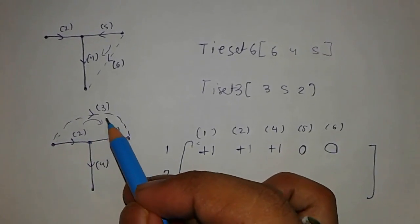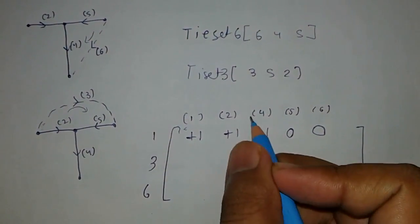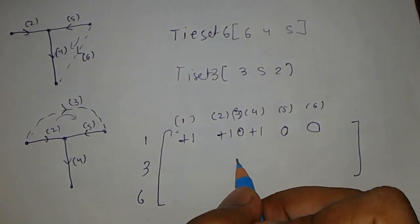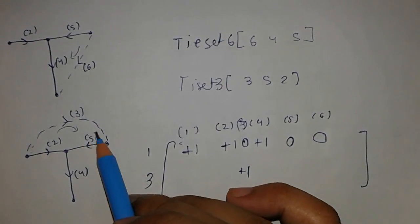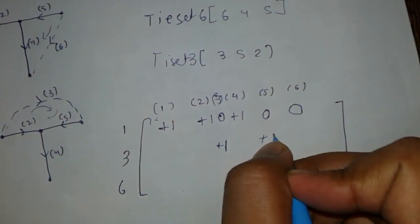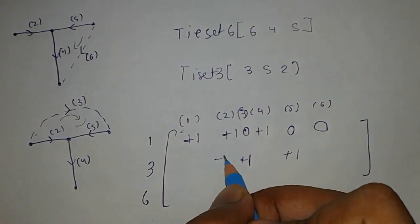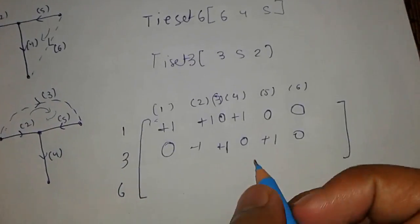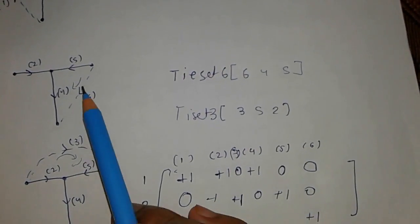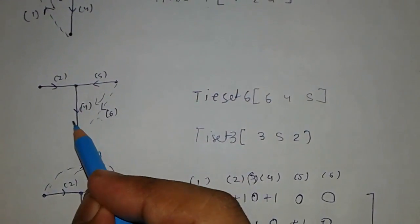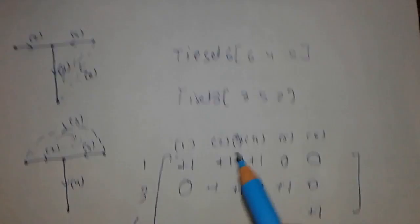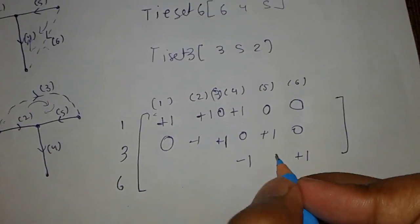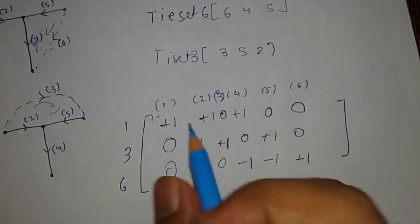For tie set three, I have taken this direction: edge three is in the same direction so plus one, edge five is also in the same direction so plus one, but edge two is in the opposite direction so minus one, and the rest are zero. For tie set six: edge six is in the same direction so plus one, edge four is in the opposite direction so minus one, edge five is also in the opposite direction so minus one, and the rest are zero. So we have constructed our tie set matrix successfully.